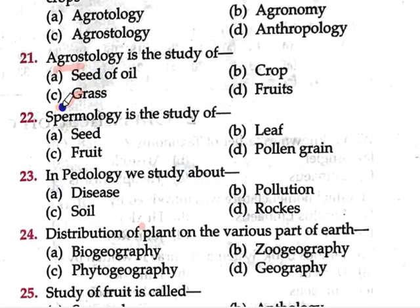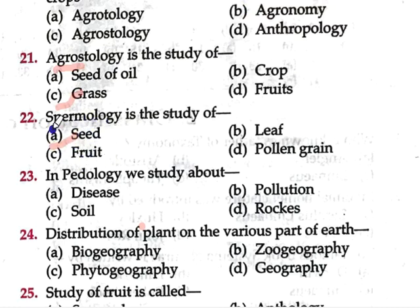Question number 22: Spermology is the study of — option A seed, option B leaf, option C fruit, option D pollen grain. Here we are talking about spermology, which deals with seeds — their morphology, interaction with the environment. Seeds come from angiosperms and gymnosperms. So spermology means study of seeds.